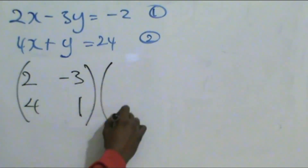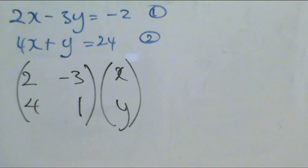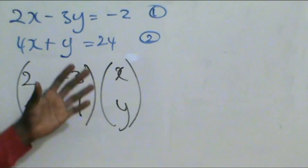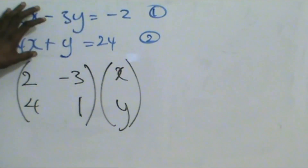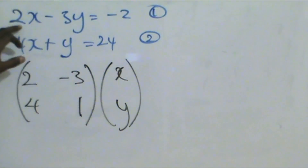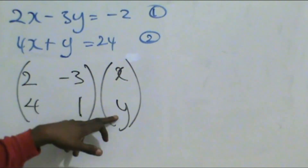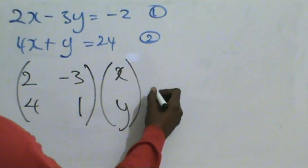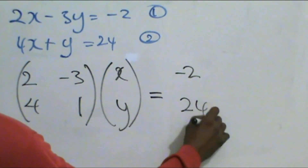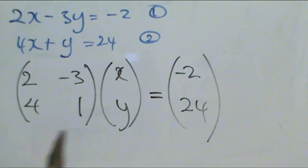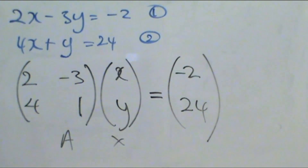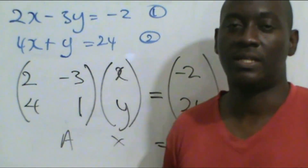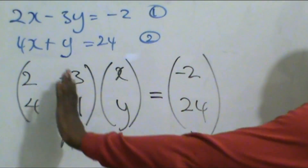That is your matrix of coefficients multiplied by your column matrix of variables x, y. If you multiply it out, you get 2x minus 3y on the top and 4x plus y on the bottom — which matches our original equations. On the right-hand side we have minus 2 on top and 24 below. This matrix here is A, this matrix is X, and this matrix is your B. That is the first step: write the system in matrix form.